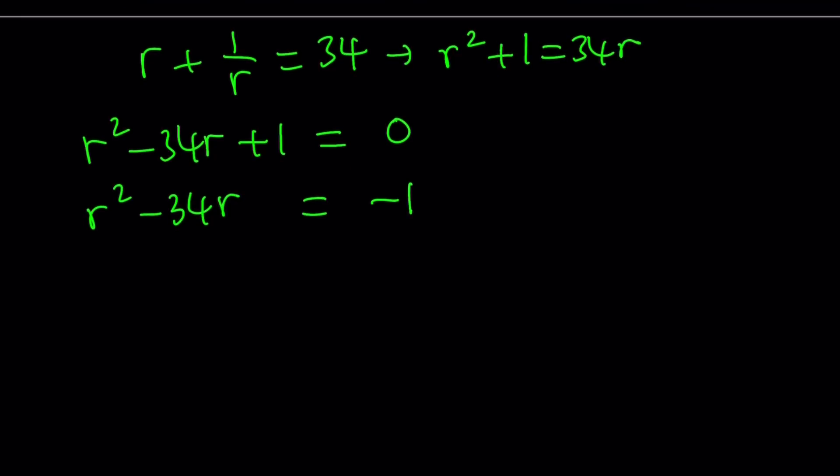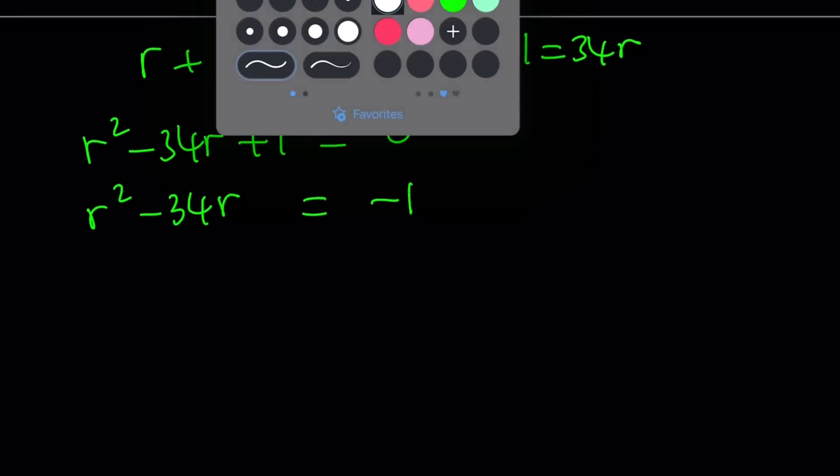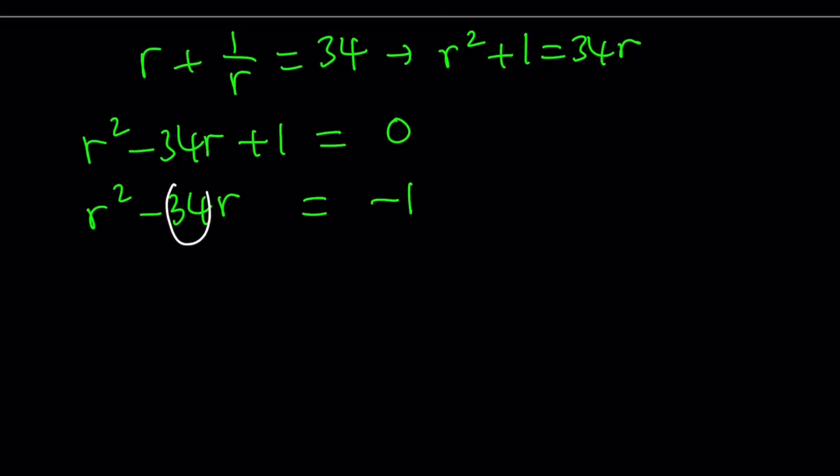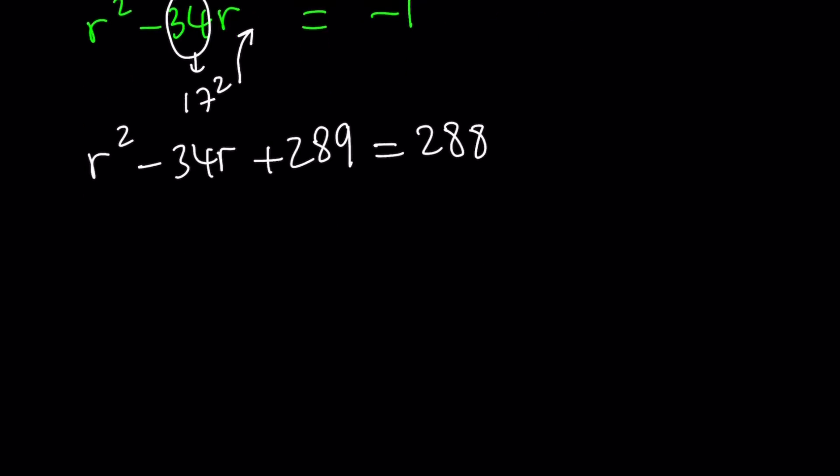Now here's what you need to think about. This is a really nice technique. If you're trying to complete the square and you have the first two terms, here's what you're supposed to do. The coefficient of x or the coefficient of r, whatever the variable is, in the middle, you take half of that number and then square it. And that's what you have to add to complete the square. So we have to add 17 squared, which is 289 to both sides. But when you add negative 1 plus 289, you get 288. Great.